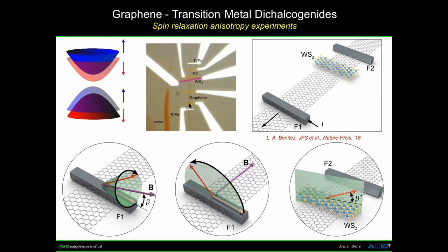This is an optical image of a typical device fabricated here in Barcelona. You see a graphene flake with several ferromagnetic and metallic electrodes attached. We partially cover the graphene channel with a tungsten disulfide flake, but we also have a pristine graphene channel as a control sample to see how spin dynamics change between pristine graphene and graphene in proximity with the transition metal dichalcogenide.